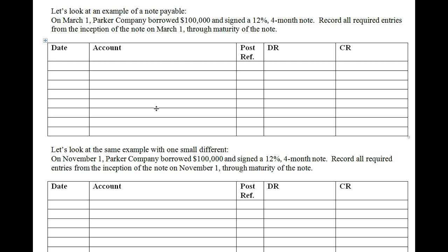For the most part, we're going to look at a current liability as anything due within one year, because we don't know the operating cycles of the companies in our textbooks. So everything within one year for our purpose is a current liability. In this chapter, we'll discuss several current liabilities: notes payable, sales taxes payable, unearned revenues, warranty liabilities, and wages payable, just to name a few.